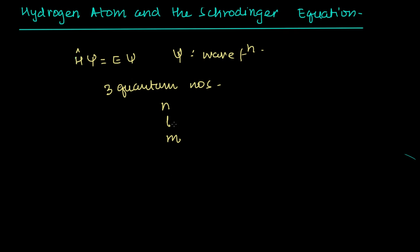So the solution was N, L and M. This was called the principal quantum number, the main quantum number, and this is called azimuthal quantum number, and this is called magnetic quantum number.